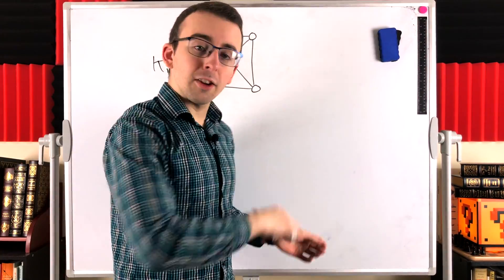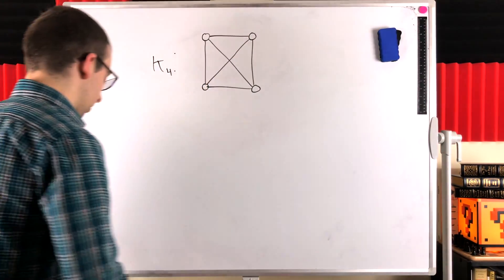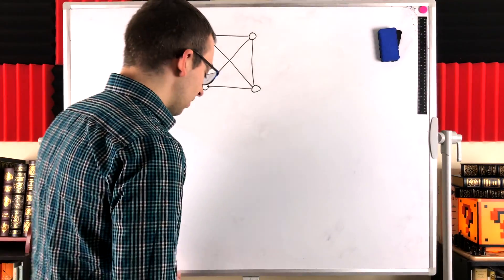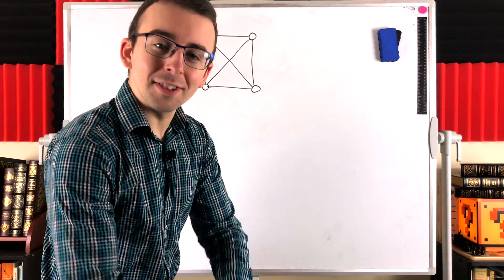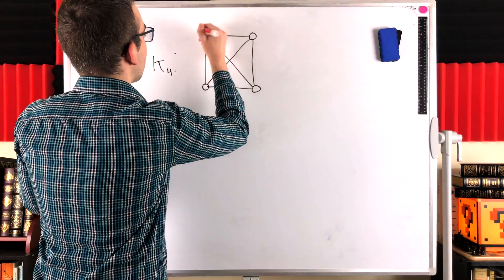Now our discussion just a moment ago tells us that we should need precisely four colors in order to color this complete graph. And if we go ahead and try to do it, we'll see that's true. Perhaps we start with this vertex here, and we color it one.